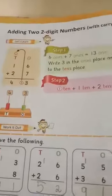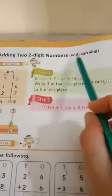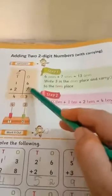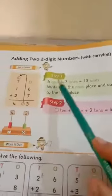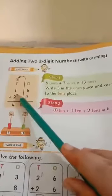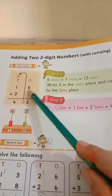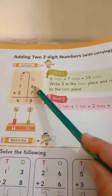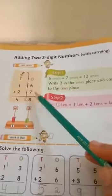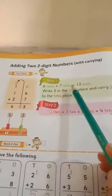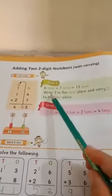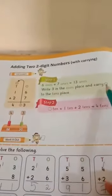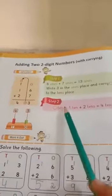Adding 2-digit numbers with carry. You see 1 in the tens place and 6 in the ones place, 2 in the tens place and 7 in the ones place. 6 and 7 is 13.